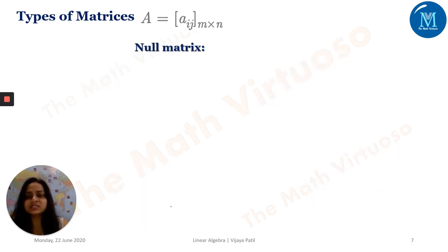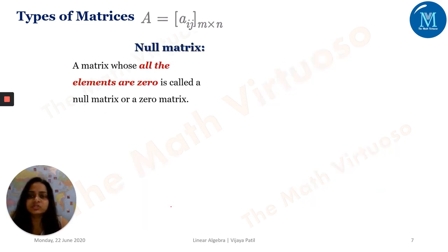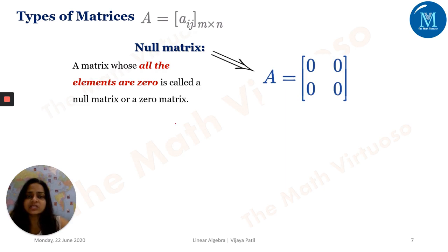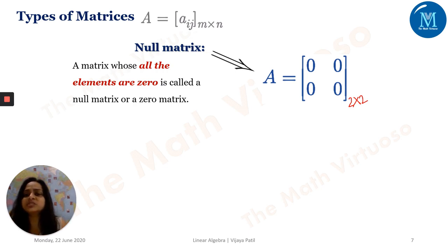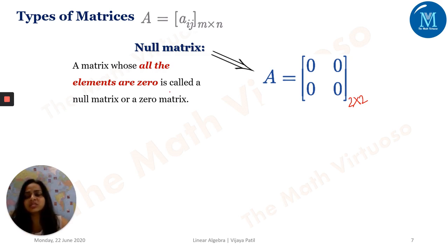Next is the null matrix — null meaning zero. All elements in the matrix are zero. There is no restriction on the order; it need not be square, row, column, or rectangular. The only condition for a null matrix is that all elements equal zero.